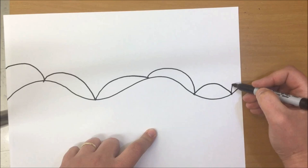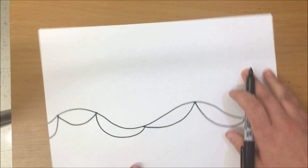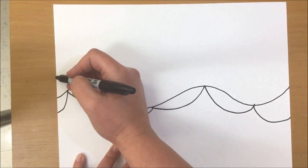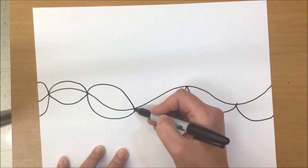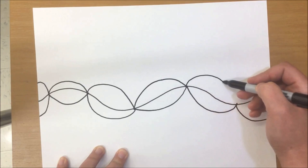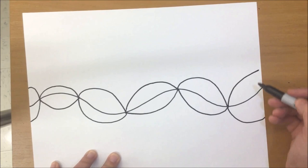Now we're going to flip our paper over and do the same thing on the other side. Coming off the page to start with, and we bounce to the first dot, bounce to the second dot, bounce to the third dot, bounce to the fourth dot, and the fifth dot. And then back off the page. So now you're ready to start making worm tunnels.